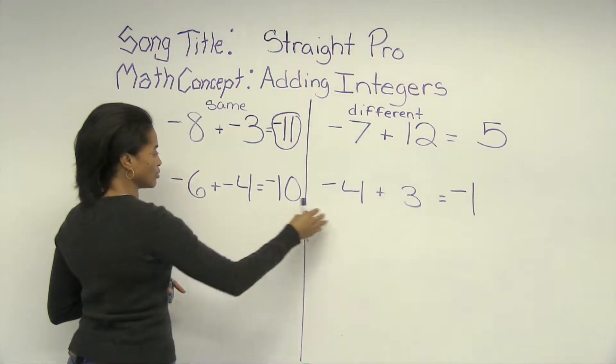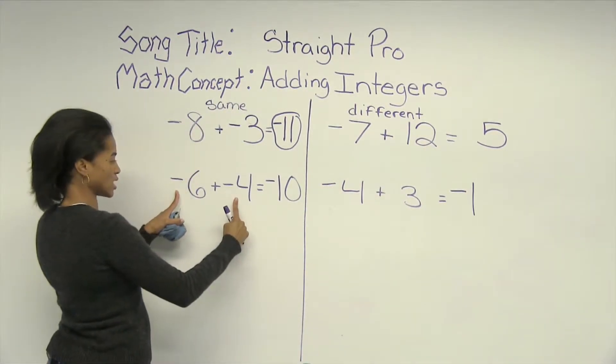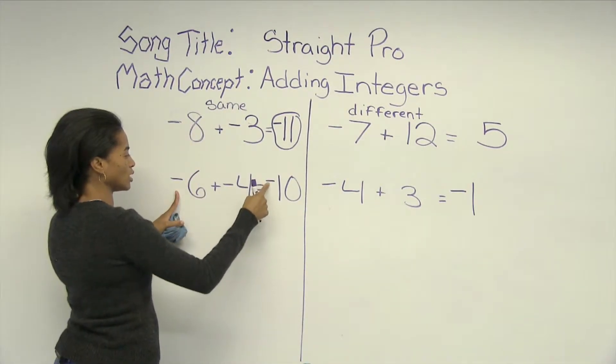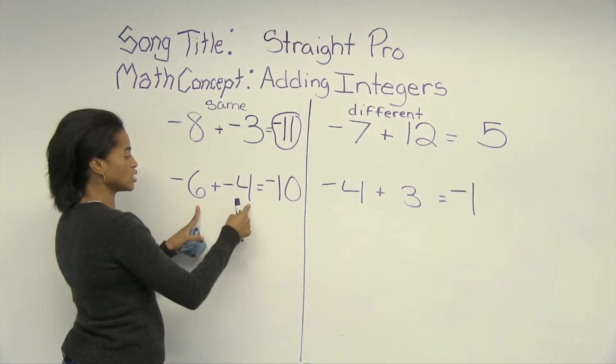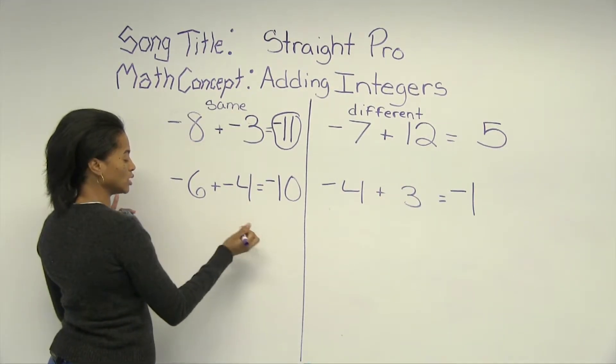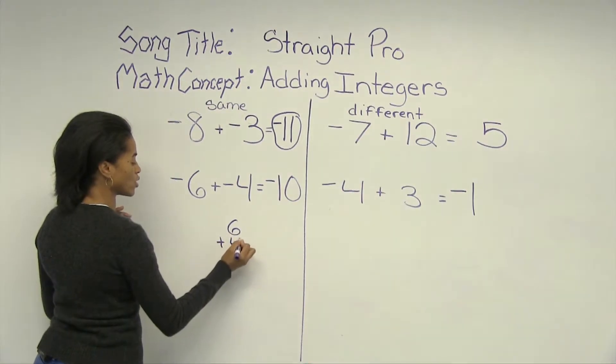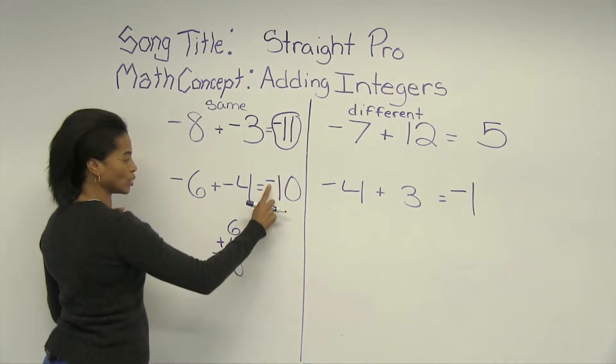In these two, you would have the signs are the same. Both are negative. We keep the sign. We add the absolute value of 6 to the absolute value of 4. 6 plus 4 gives you 10, and so we get negative 10.